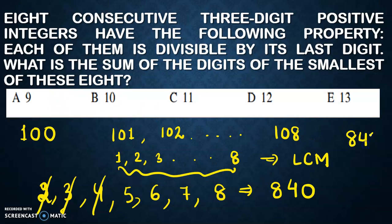Now they are asking what is the sum of the digits of the smallest of this number. The smallest number will be 841, because after 840 the next number - we cannot take 0. So 841, and my numbers will be 841, 842, 843 like that till 848. The sum of the numbers - you can check 8 plus 4 is 12 plus 1 is 13.